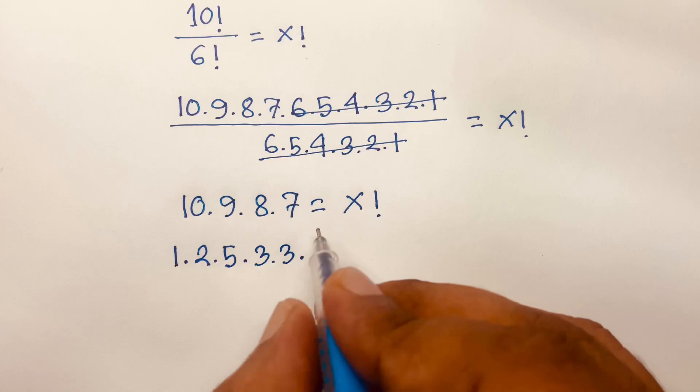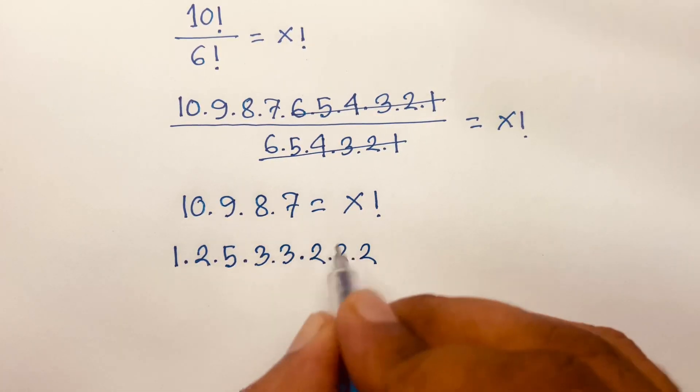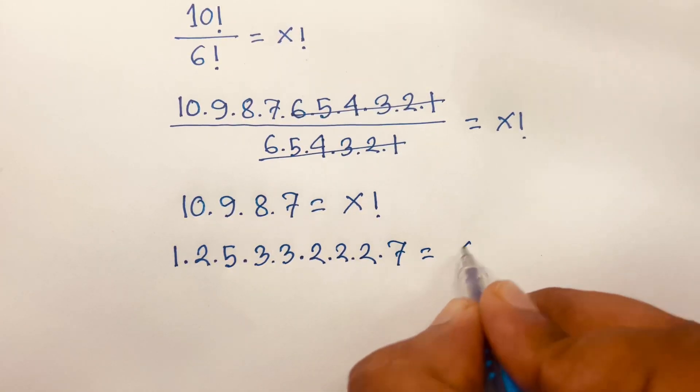And 8 is 2 times 2 times 2. We'll find out the factors. And 7 is just 7, equal to x factorial.